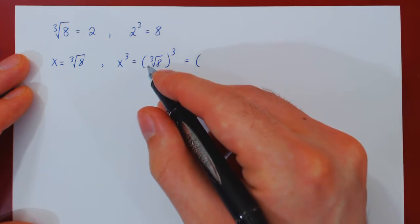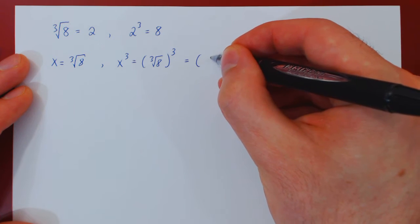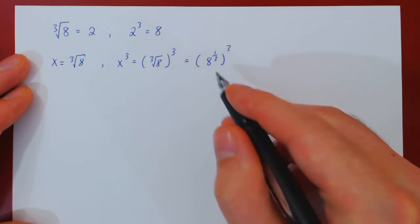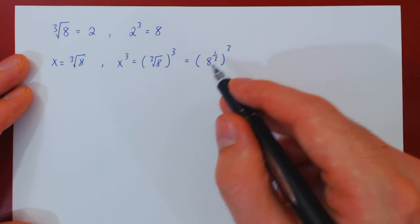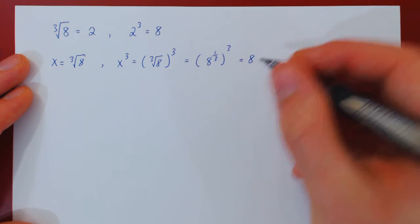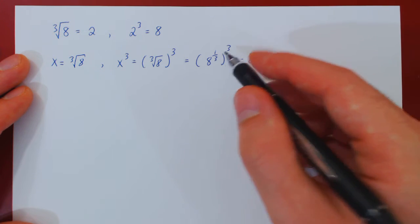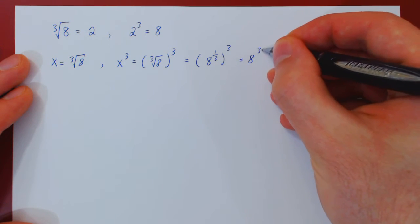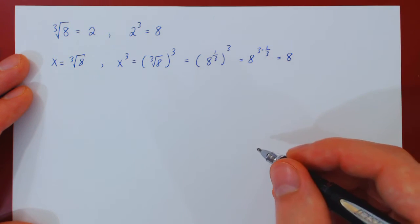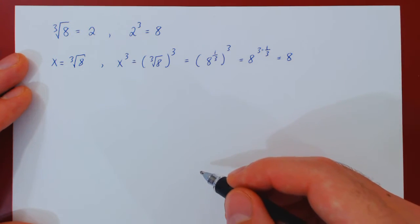You can also view the cube root as an exponent of 1 third. And now we have a double exponentiation. When you double exponentiate, you can combine the exponents by multiplying them. So this will be 8 to the 3 times 1 third. But 3 times 1 third is 1, and so we get 8, as expected.